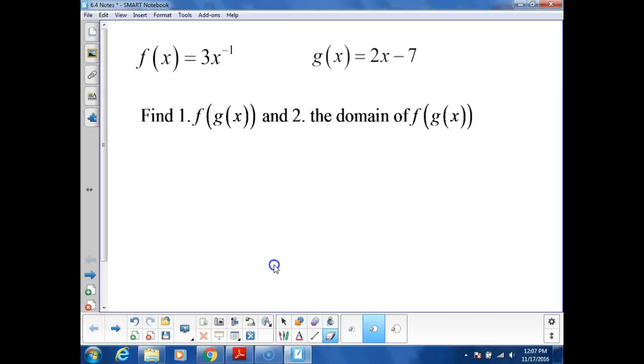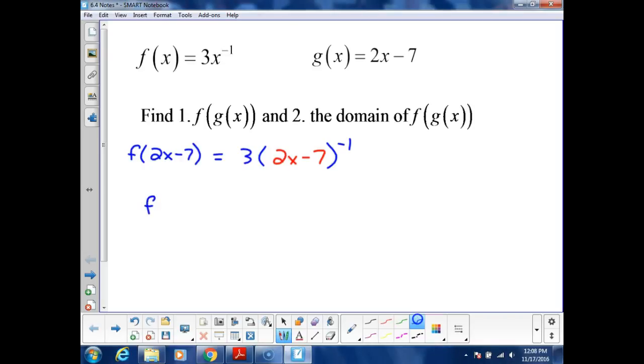Hopefully I'm all aligned. Good, I'm aligned. All right, so we need to do f of g of x, and then we need to find the domain of that. So basically, I need to find f here of 2x minus 7. So that's going to be 3 times 2x minus 7 to the negative 1 power. So f of g of x is going to be 3 over 2x minus 7. That is my function.